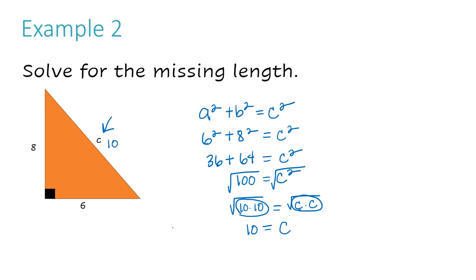When the directions ask me to solve for the missing length and I use the Pythagorean Theorem — a² + b² = c² — I get C equals 10.